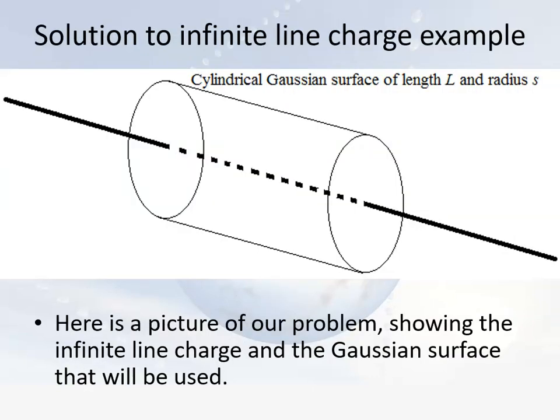So here is our imaginary Gaussian surface — and I always try to remind you that this is an imaginary surface, but the mathematical laws still apply. It's a cylinder of length L and radius s. The actual value of the electric field at a distance s from the line should not be dependent on the length of our imaginary Gaussian surface, so that length L had better cancel. Since this line charge has charge per unit length lambda, the amount of charge contained within our cylinder is simply equal to lambda times L.